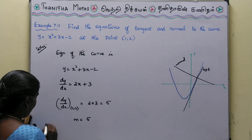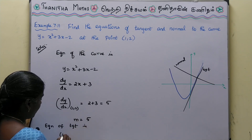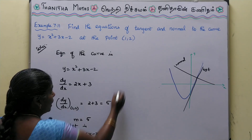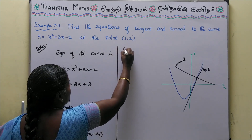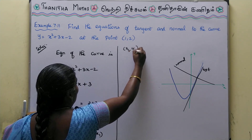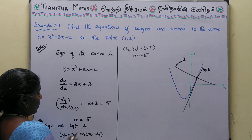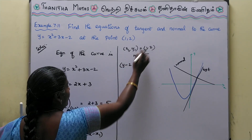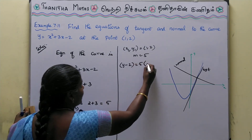The equation of the tangent uses the formula y - y₁ = m(x - x₁). Substituting x₁ = 1, y₁ = 2, and m = 5 into the formula gives us the equation of the tangent to the curve.